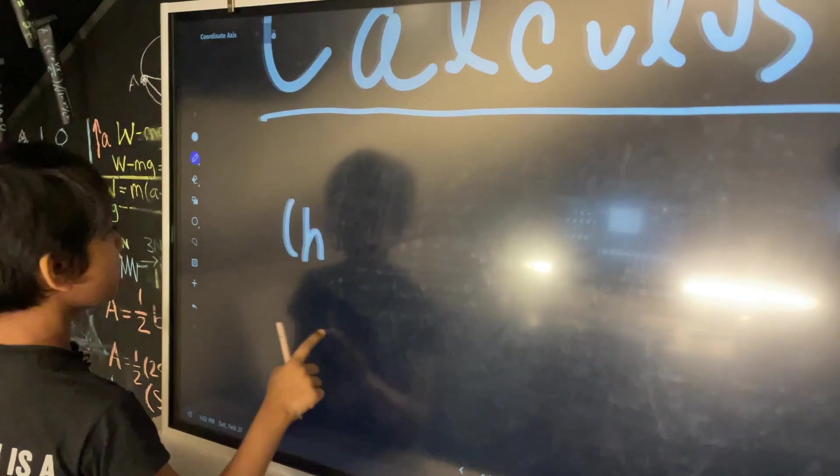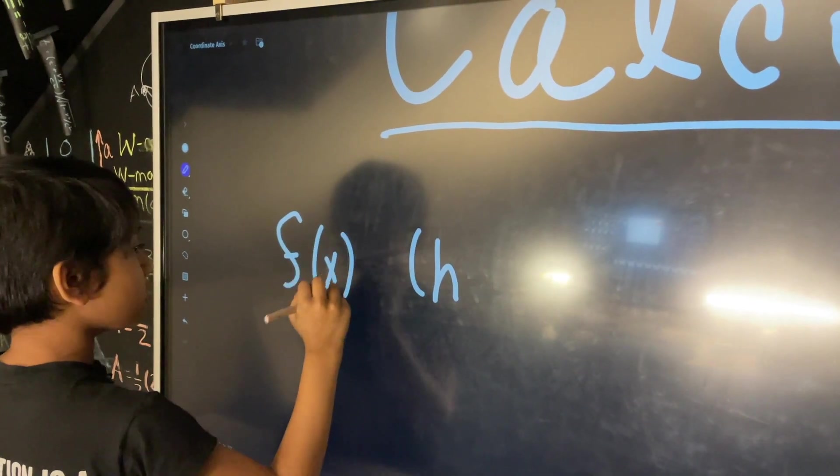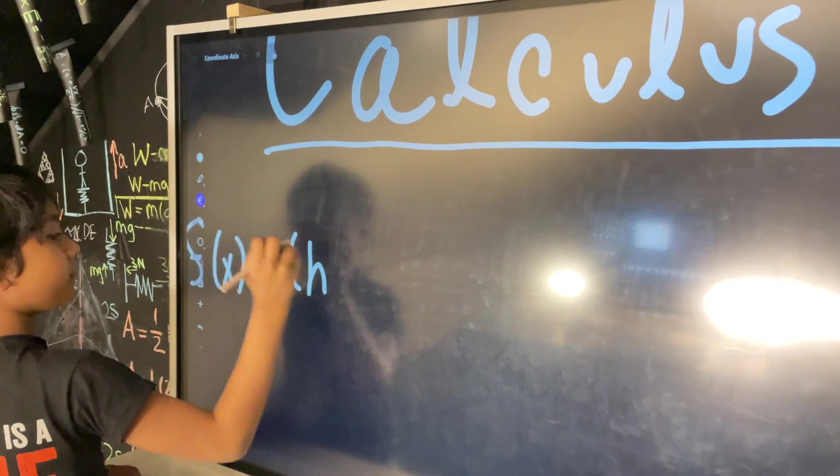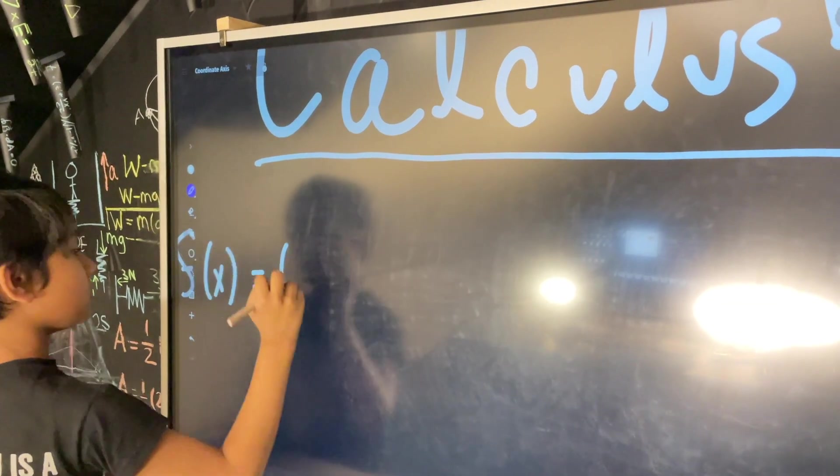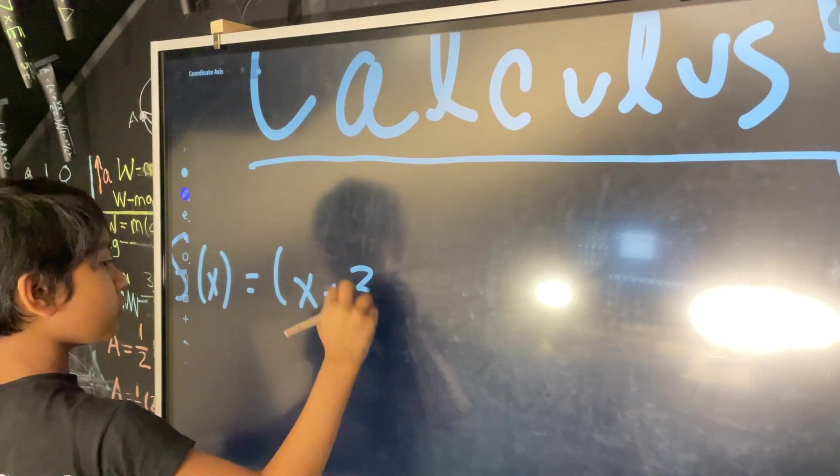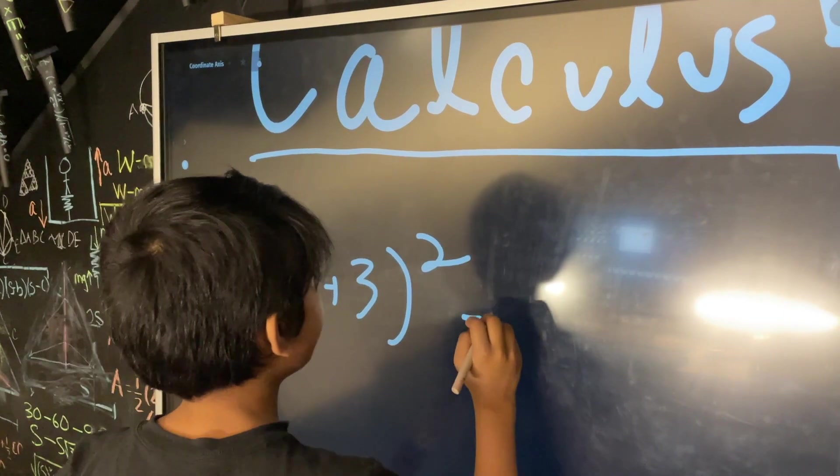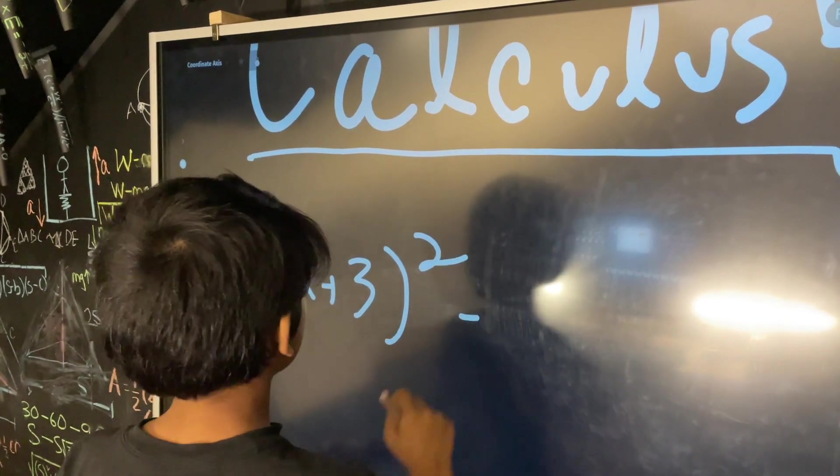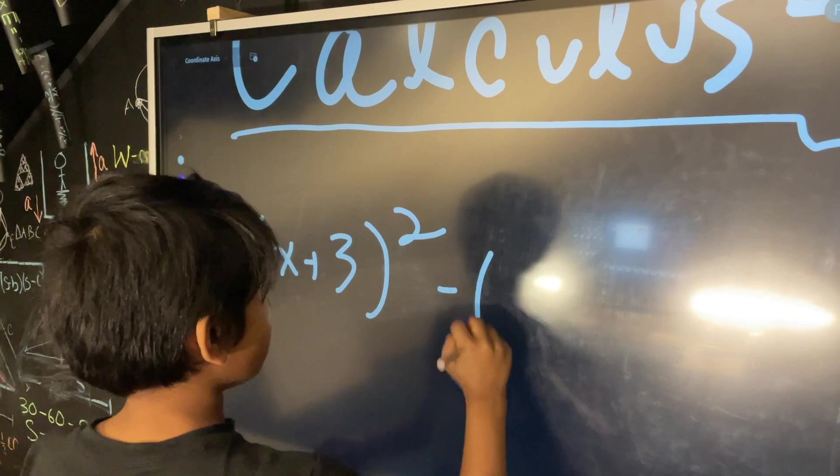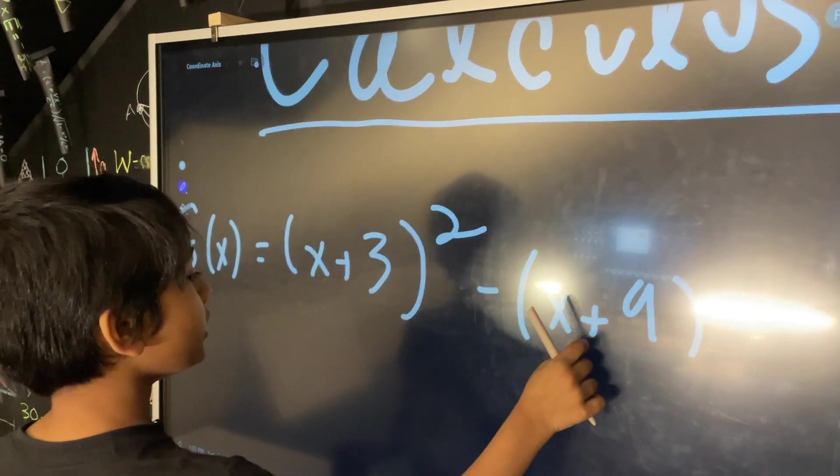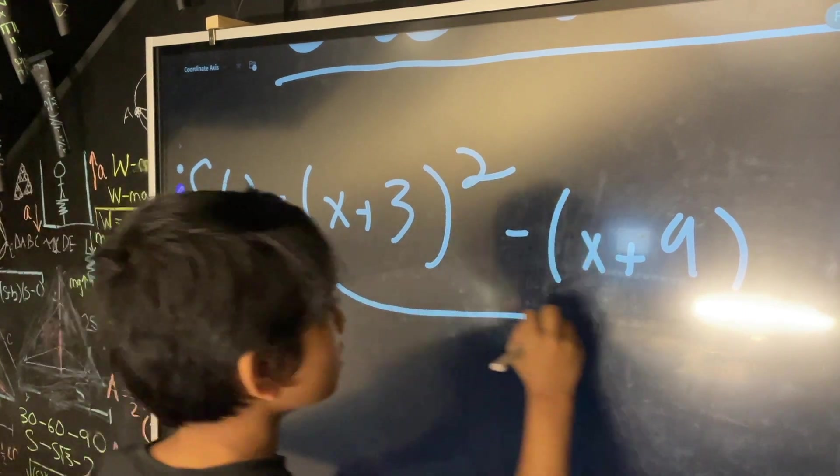So, S of x is equal to x plus 3 whole squared minus x plus 9 over x.